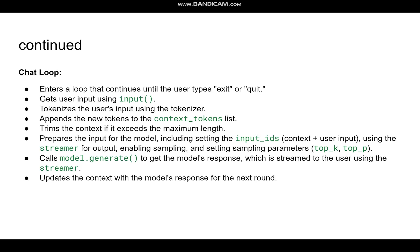The conversation loop enters and continues until the user types 'exit' or 'quit'. It gets user input, tokenizes it, and appends the new tokens to the context token list. The context is trimmed if it exceeds the maximum length. Then it prepares input for the model, uses the streamer for output, enables sampling with sampling parameters, and calls model.generate() to get the model's response, which is streamed to the user. The context is then updated with the model's response for the next round.